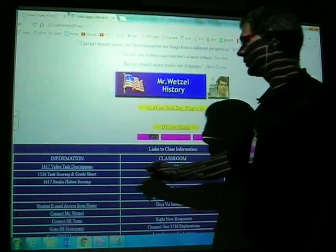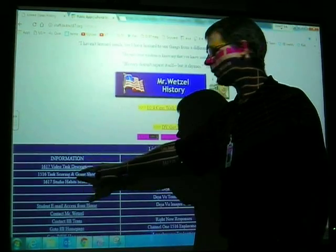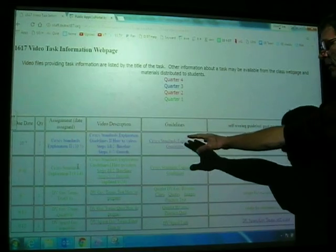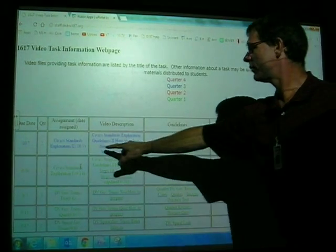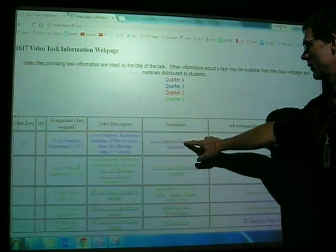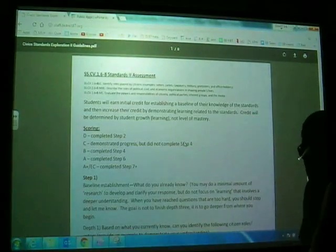All right, this is going to be the How to Do the Baseline, Steps 1 and 2 for the Civics Exploration 2. It's going to be familiar from the first one, Video Task. This is the PDF file that has the information. This video will be here, and then eventually there will be a Steps 3 through 7 video. So here we go. I'm going to click there, and the PDF is going to open.